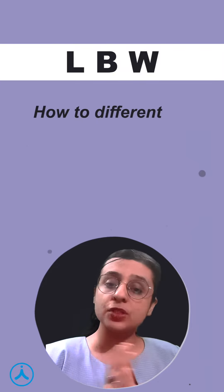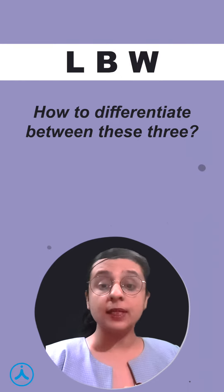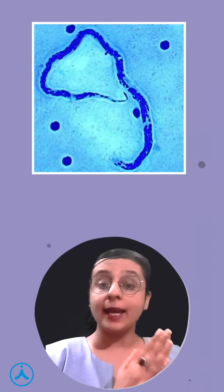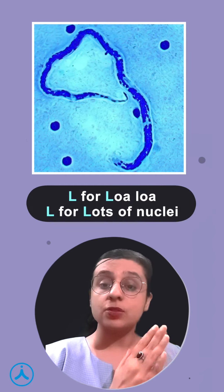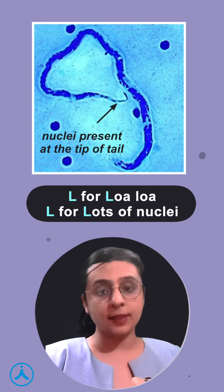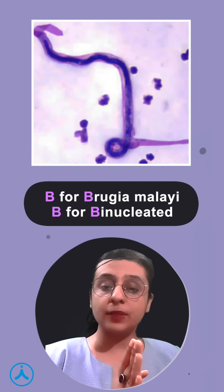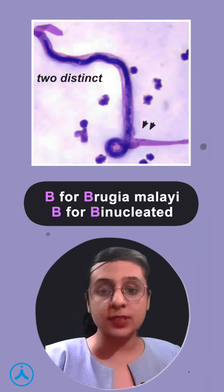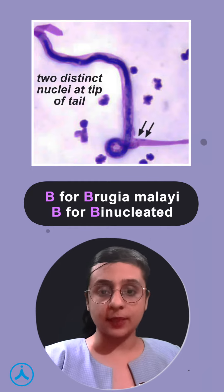Now how can you differentiate between these three? Simply, you have to look at the tail of the microfilariae. L for Loa loa — L for lots of nuclei. So in Loa loa, the nuclei are extending till the tip of the tail. In Brugia malayi, B for binucleated — two distinct nuclei can be seen at the tip of the tail.